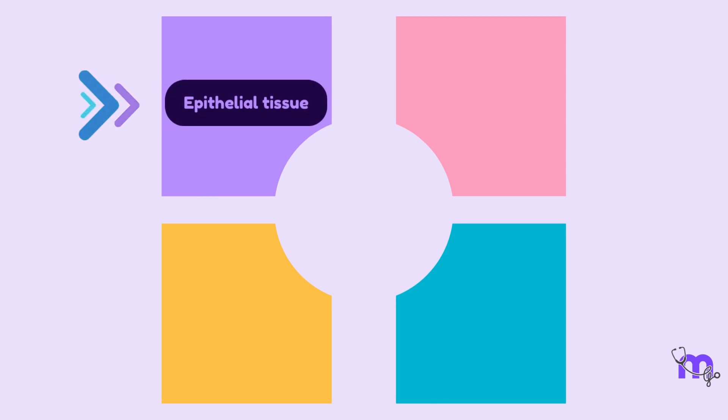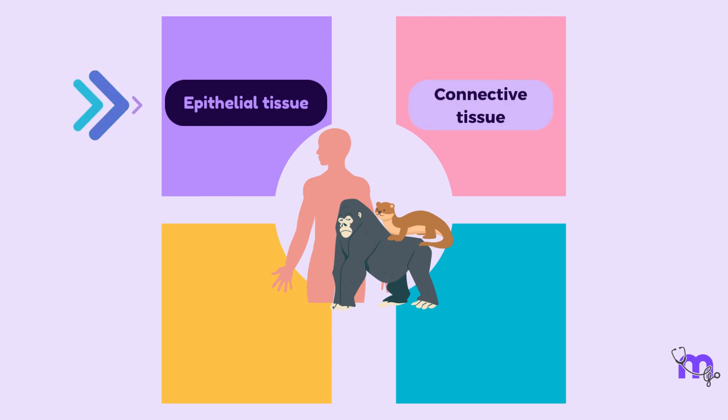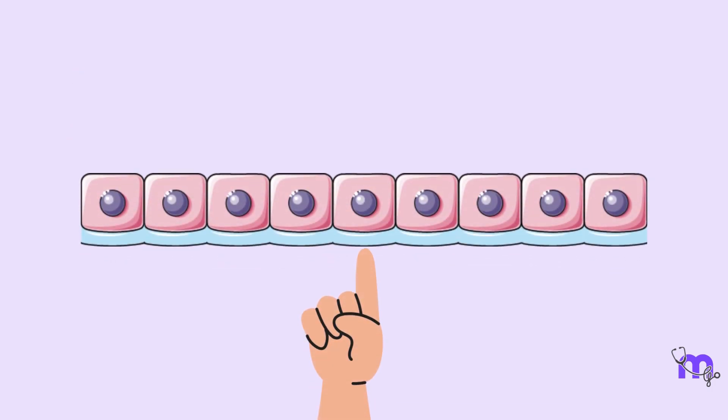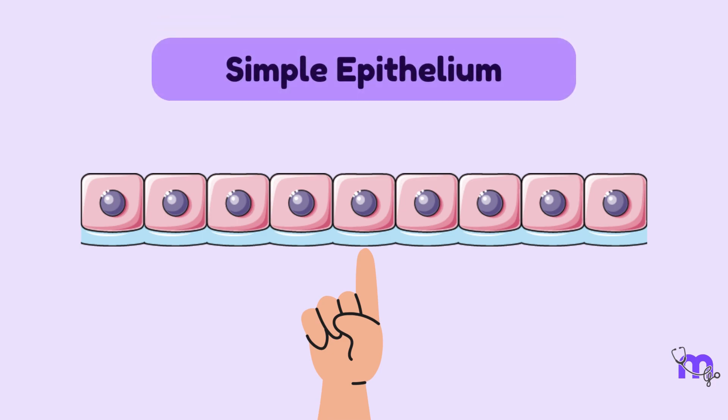Epithelial tissue is one of four primary tissues in the animal body. The other three being connective tissue, muscle tissue, and nervous tissue. A single layer of epithelial cells is also called simple epithelium.